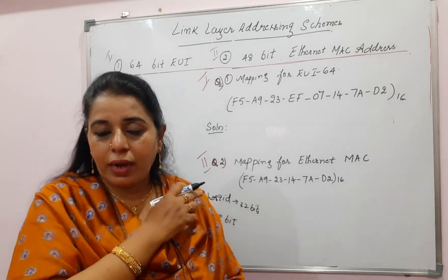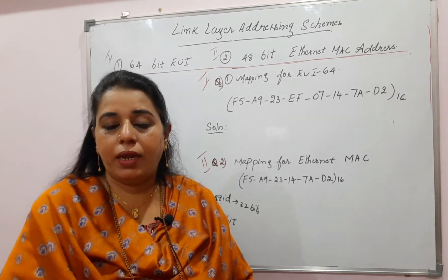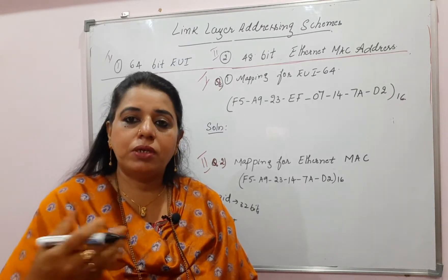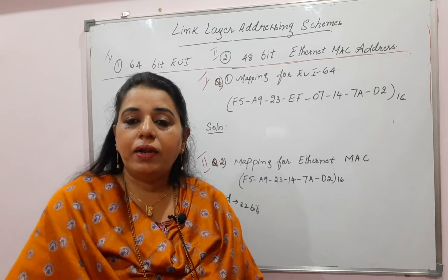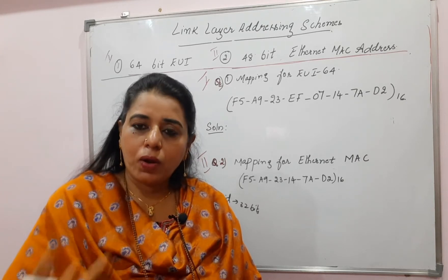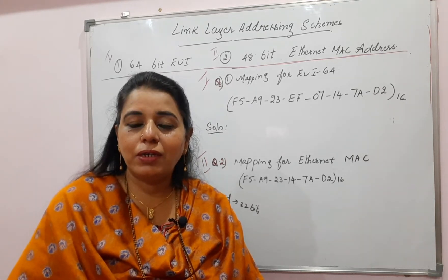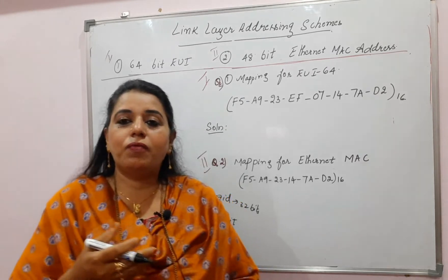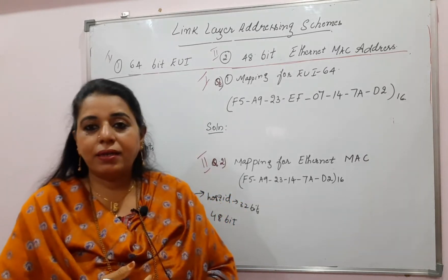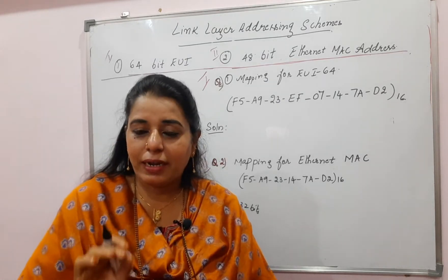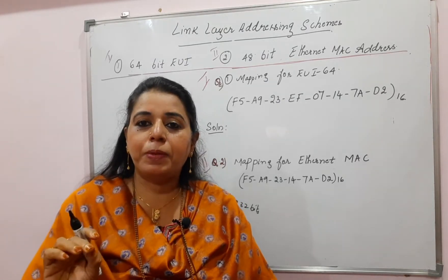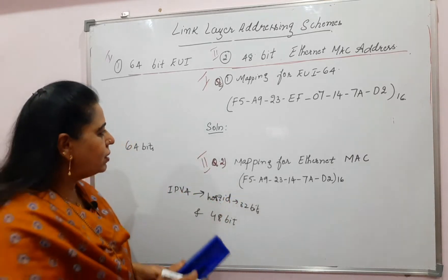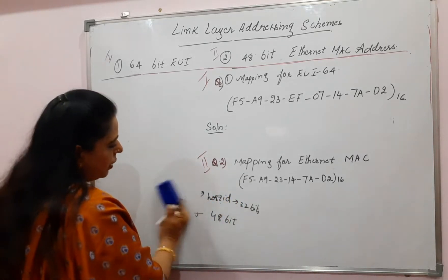There are two types of addresses available: EUI and 48-bit Ethernet MAC. For the first one, EUI, you have to follow a different procedure to arrive at the interface identifier — or the host ID in simpler words. For the other, the 48-bit Ethernet MAC address, the procedure is slightly different. The steps are very simple, and you can arrive at the 64-bit interface identifier.